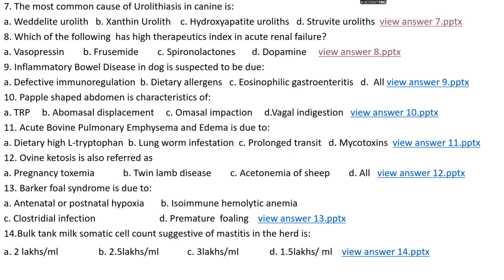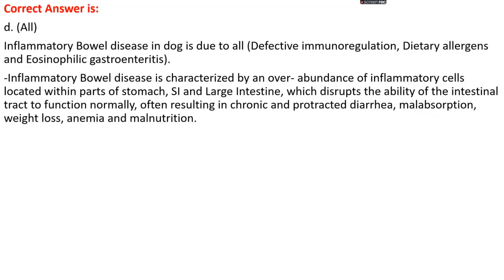Question number 9. Inflammatory bowel disease in dogs is suspected to be due to: options A, defective immunoregulation; options B, dietary allergens; option C, eosinophilic gastroenteritis; or options D, all. The right answer is option D, all. Inflammatory bowel disease in dogs is due to defective immunoregulation, dietary allergens, and eosinophilic gastroenteritis — all promote inflammatory bowel disease. It is characterized by an overabundance of inflammatory cells in the stomach, small intestine, and large intestine, disrupting normal intestinal function and resulting in chronic diarrhea, malabsorption, weight loss, anemia, and malnutrition.